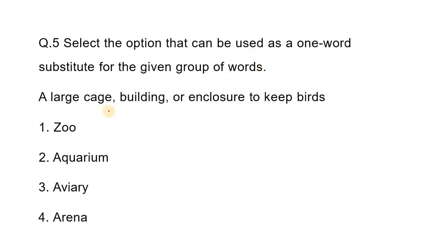One more substitution question: a large cage or building used as an enclosure to keep birds. That's why we have to identify the correct word. The aviary is the correct answer. In a zoo there are animals; in an aquarium there are water creatures. The aviary is the correct answer for a large enclosure for birds.